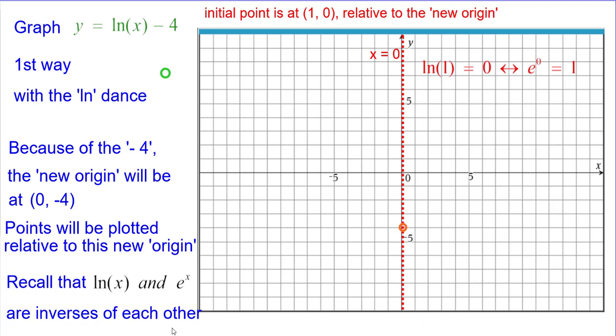The initial point is going to be at (1, 0) relative to the new origin because e to the 0 power is 1 and the natural log of 1 is 0. So that will be our first point.